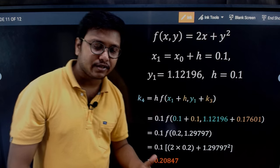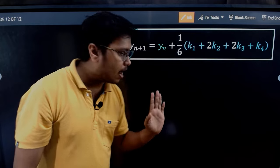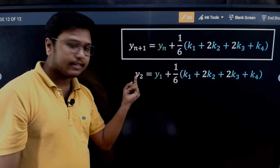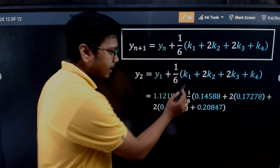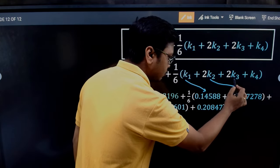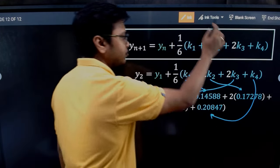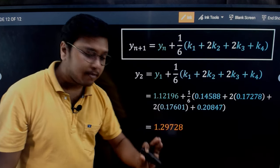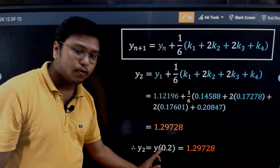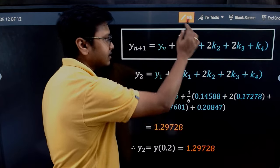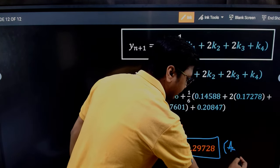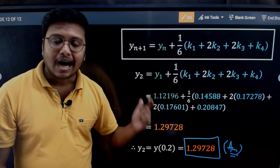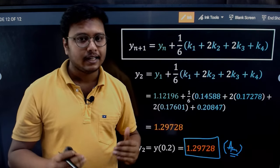Now we apply the main RK4 formula for n = 1: y2 = y1 + (1/6)(k1 + 2·k2 + 2·k3 + k4). Plugging in all the new k1 through k4 values and computing gives us the final answer: y2 = 1.29728. This is the value of y corresponding to x = 0.2. I hope this video was helpful — thank you and have a nice day.